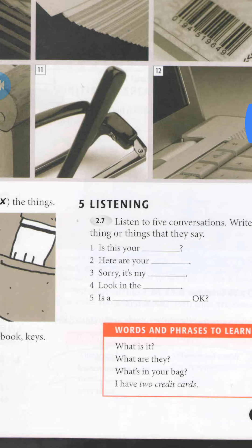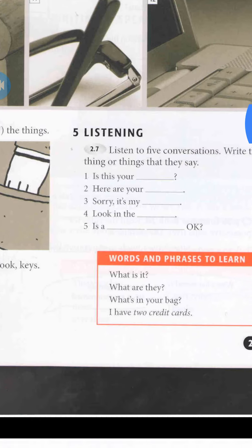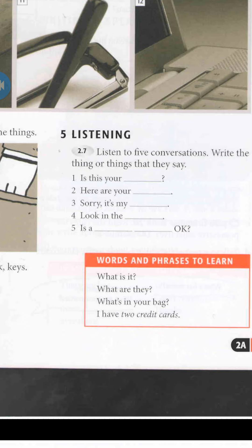Do you understand? Now let's review. Words and phrases to learn: to ask a question about one item — if you see one item you ask 'What is it?' If it is plural, 'What are they?' If you want to know what's in your bag or your friend's bag, you say 'What's in your bag?' And if you want to answer, you say 'I have two credit cards.'